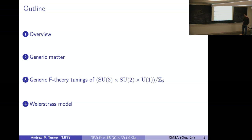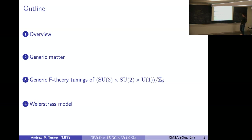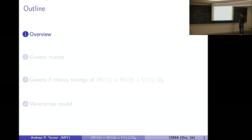Then I'm going to talk about a class of generic F-theory tunings of the standard model gauge group with the Z-6 quotient. And finally, I'm going to construct a Weierstrass model that captures all of the models that I talked about.